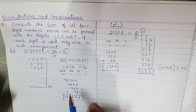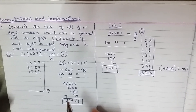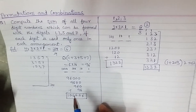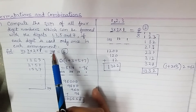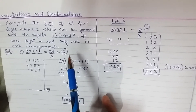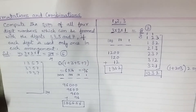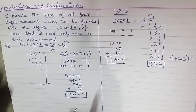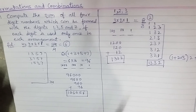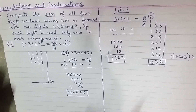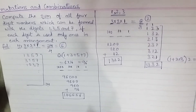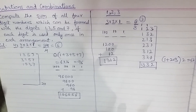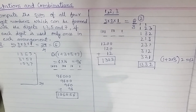This is a slightly tricky problem, so I suggest you go through the video two or three times to master the method. Here is a homework for you: replace the digits with 2, 3, 4, and 5, and compute the sum of all four-digit numbers that can be formed with each digit used only once. Post your answers in the comment box. This question is very important for all competitive exams including IIT, engineering entrances, and NDA. Thank you for watching!